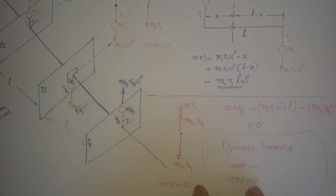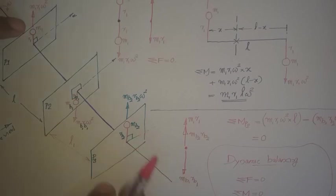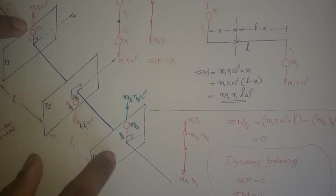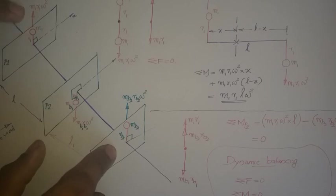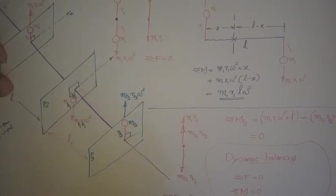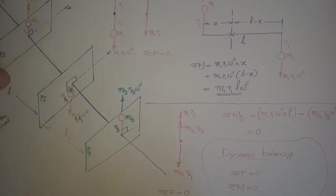So for dynamic balancing — where masses rotate in different planes — the net force must be zero and the net moment must be zero. This means the force polygon must be a closed one and the moment polygon must also be a closed one. For dynamic balancing, two balancing masses in two separate planes are required. Thank you.